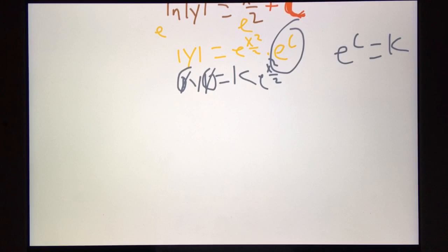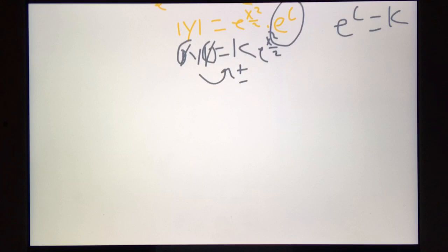Because it doesn't matter what y equals, because if we were to get rid of these absolute values, we'd have to move a plus or minus over to here. But it doesn't matter, because since we don't know what k is, it can be plus or minus anything. And we don't have to worry about it. So, y equals k times e to the x squared over 2.